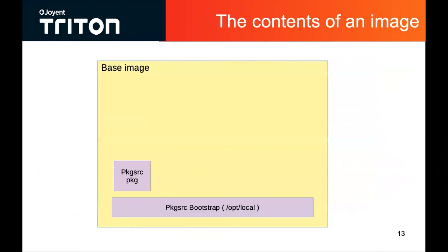Looking at the contents of an image, we talked about the base layer — the base image. In this case we've got a base image which includes a pkgsrc bootstrap. pkgsrc is the packaging system that we use in SmartOS. The base image has got a single package installed on it. pkgsrc releases a couple of different versions per year, and once you have a versioned bootstrap, any packages you install get installed from that bootstrap. For at least Triton and Manta images, we start with a single pkgsrc bootstrap, and then all packages get installed at that same complementary version. So here we've got a base image with a pkgsrc package — that's not very much on its own.